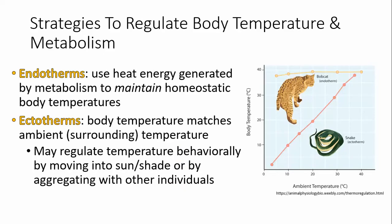There are two major life strategies: endotherms and ectotherms, otherwise known as warm-blooded and cold-blooded. Endotherms have their own system for regulating body temperature. If you look at a graph of ambient versus body temperature, a bobcat's body temperature is pretty constant no matter the outside temperature — whether it's 5 degrees or 40 degrees outside, that bobcat maintains a stable internal temperature of just under 40 degrees Celsius.